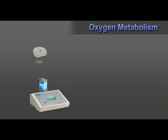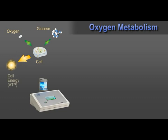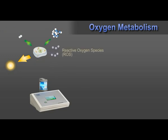Every cell needs oxygen and glucose. The mitochondria of a cell convert glucose and oxygen to energy. This is referred to as oxygen metabolism. Oxygen metabolism is an ongoing essential process in our cells. The normal and unavoidable byproduct of cell metabolism is highly reactive oxygen radicals known as reactive oxygen species, commonly referred to as ROS.